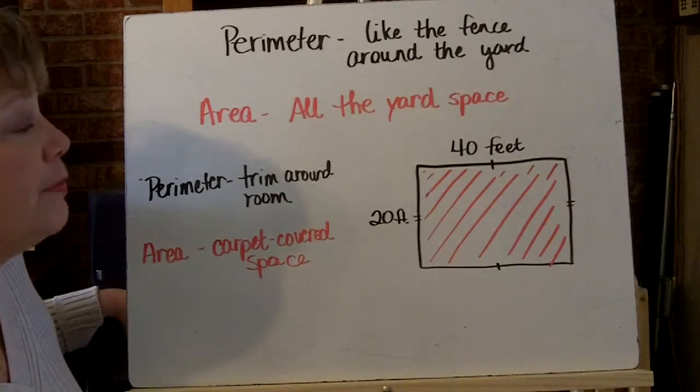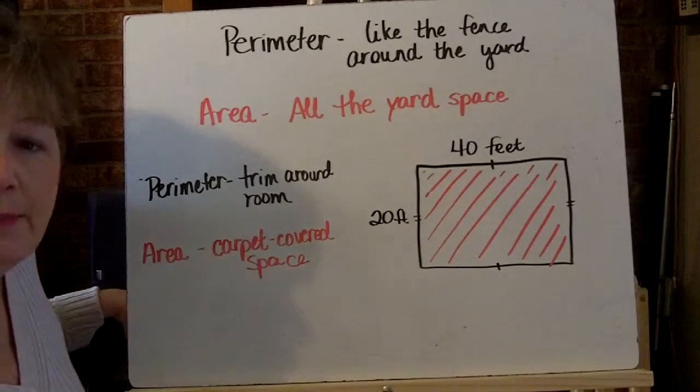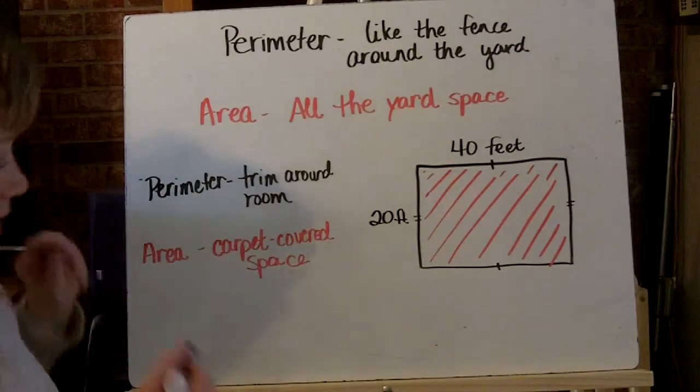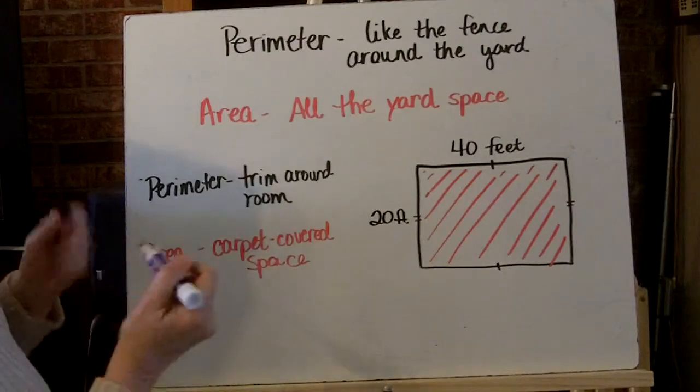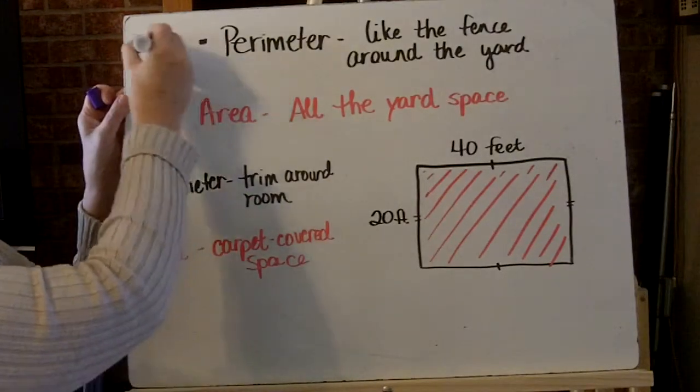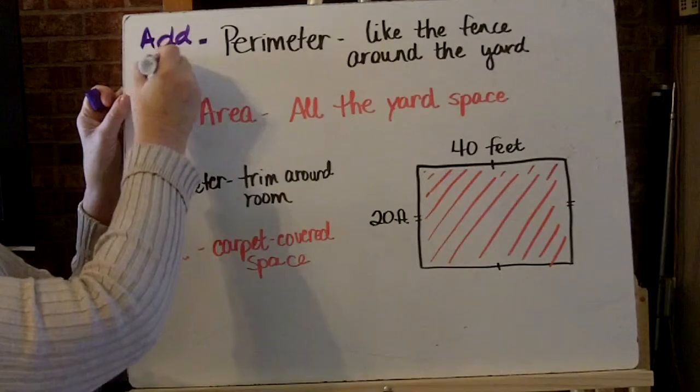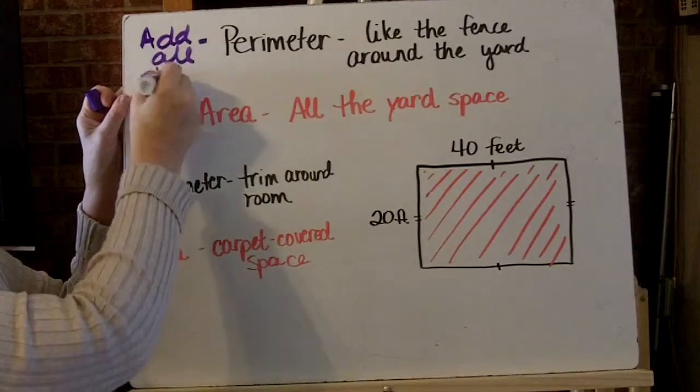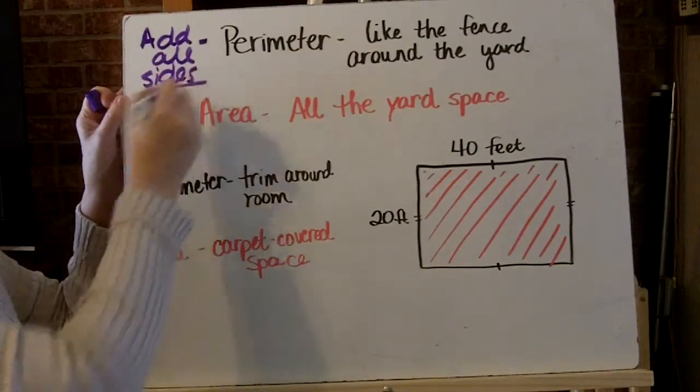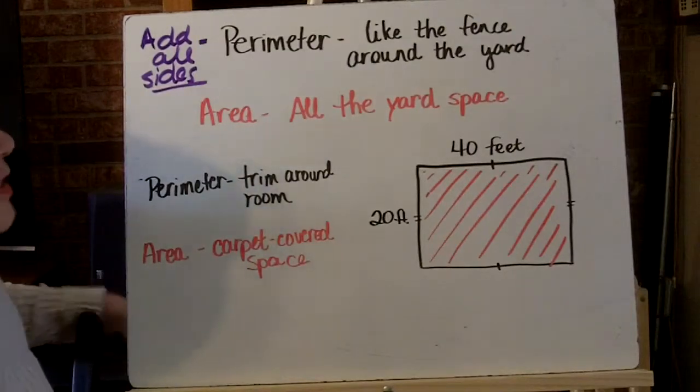To figure out the perimeter, it's very simple. All you do is add all the sides. To figure out the perimeter, you add all the sides. And that's what we're going to focus on today.